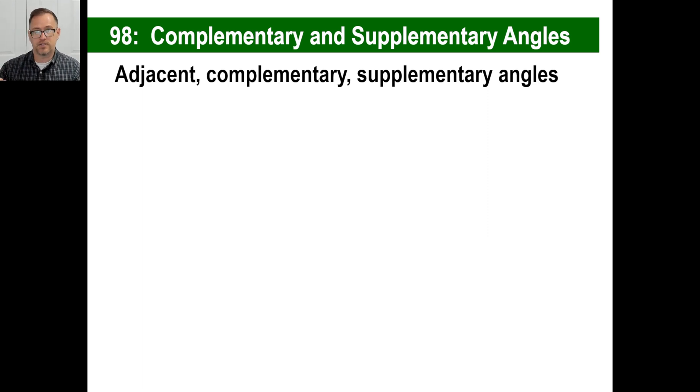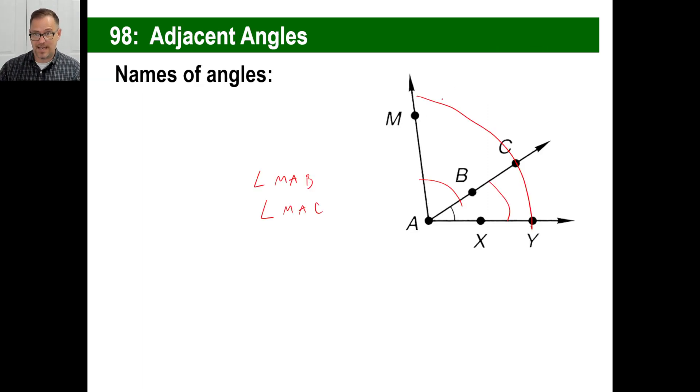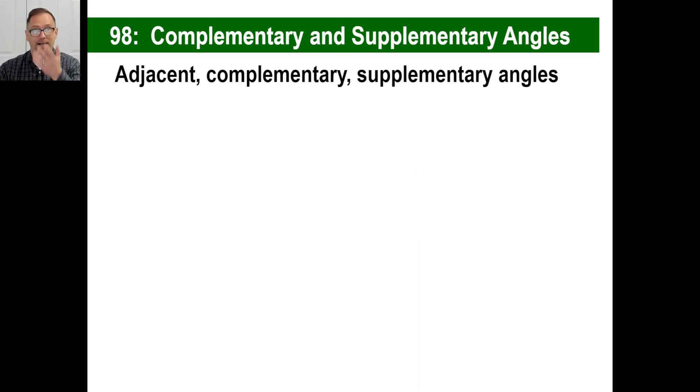All right. Adjacent, we talked about what that means. It's next to each other. In other words, you would say angle M, A, B is adjacent to angle C, A, X. They're right next to each other. They share a vertex or a line as a side.